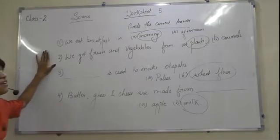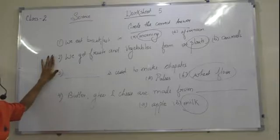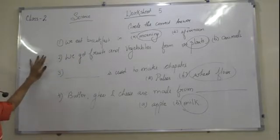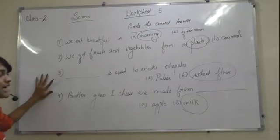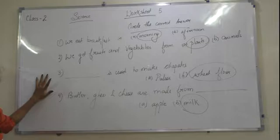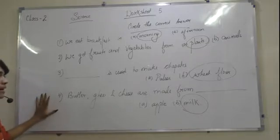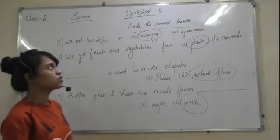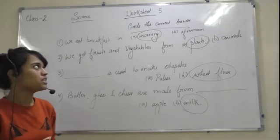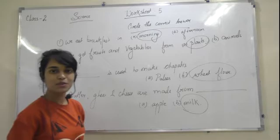Let's review: we eat breakfast in the morning. We get fruits and vegetables from plants. Wheat flour is used to make chapatis. Butter, ghee, and cheese are made from milk. So this was a short video of worksheet 5 and the topic was 'Circle the Correct Answers.' Thank you.